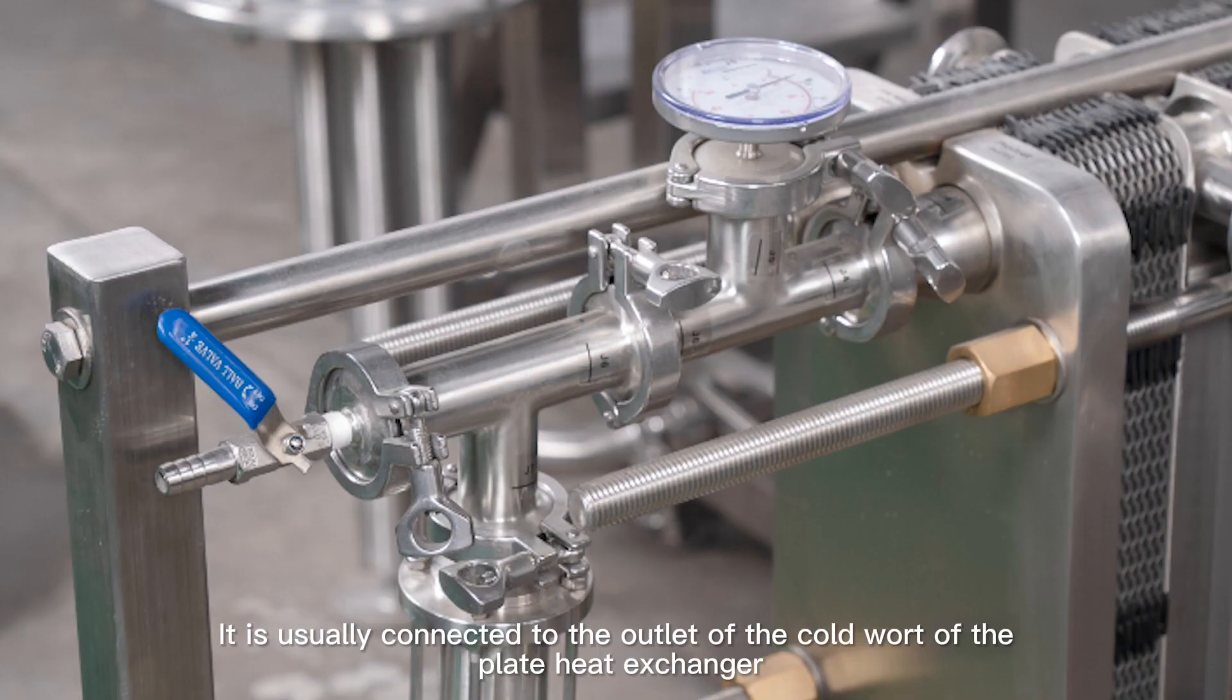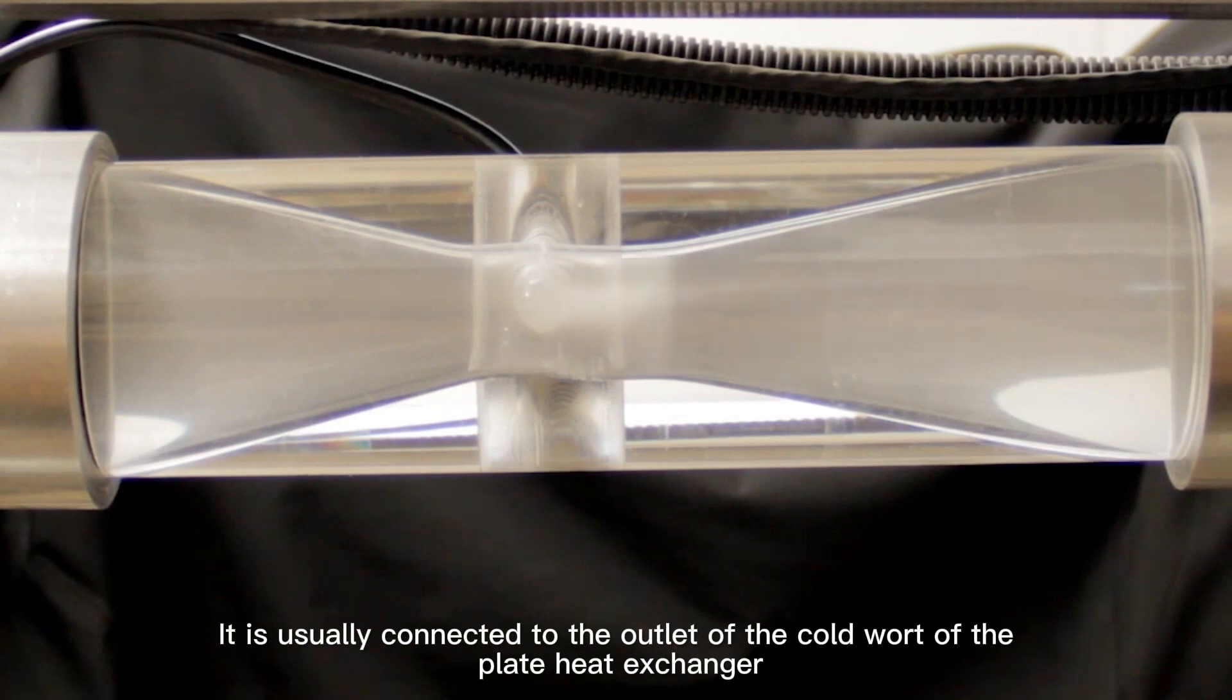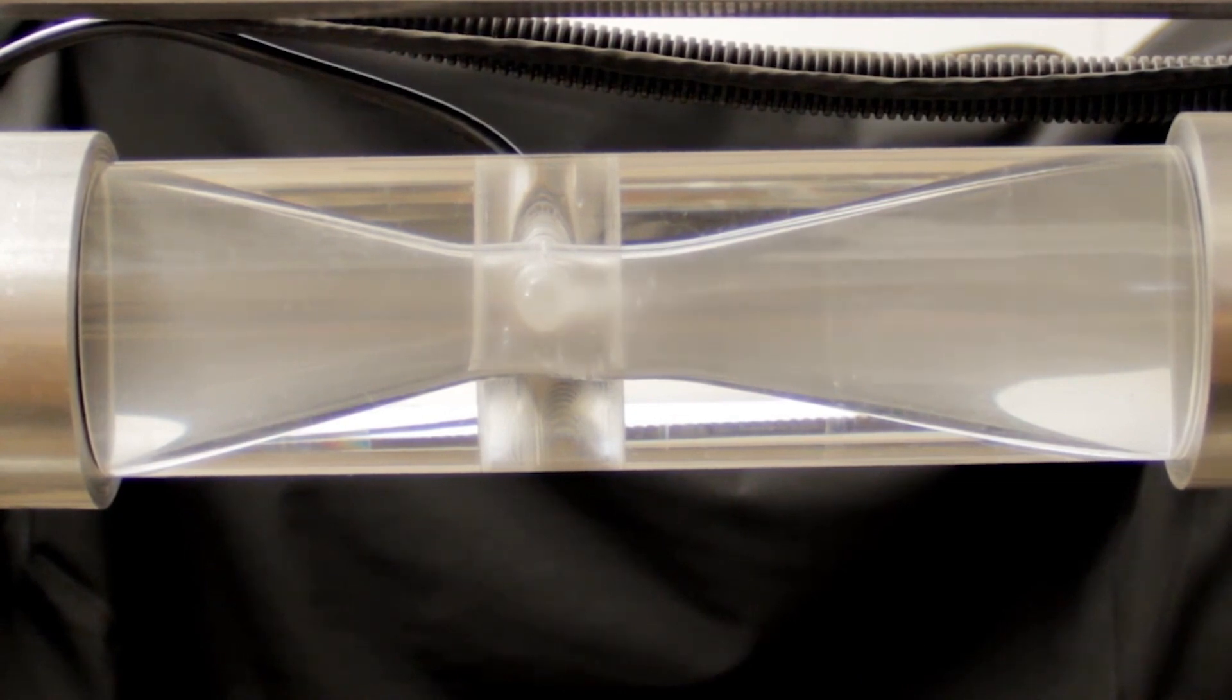It is generally connected to the outlet of the cold wort of the plate heat exchanger. During use, sterile air is introduced from the compression section.